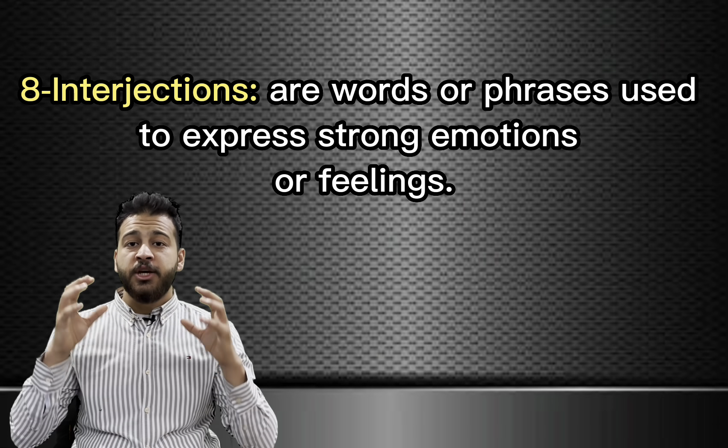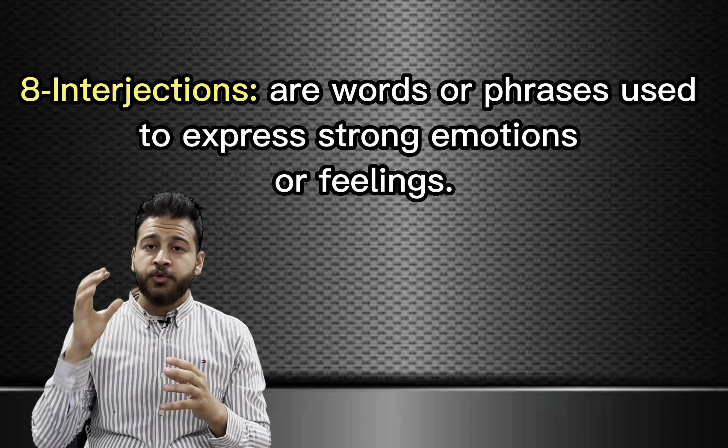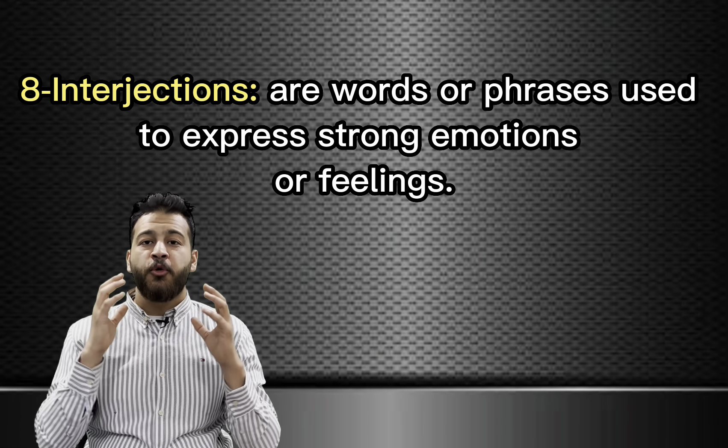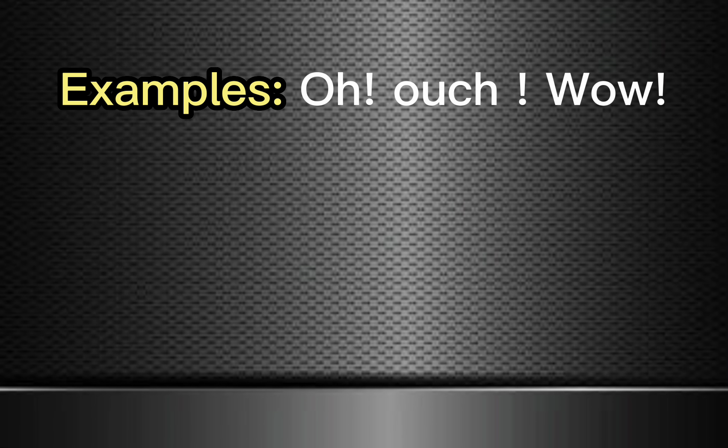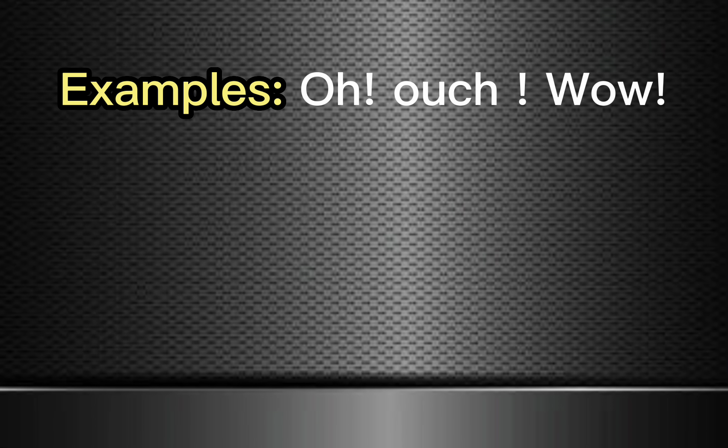Number eight: interjections. Interjections are words or phrases used to express strong emotions or feelings. These were the eight parts of speech in English. By understanding the basic building blocks of language, you'll be able to communicate more effectively and express yourself more clearly. Thanks for watching. Have a good day.